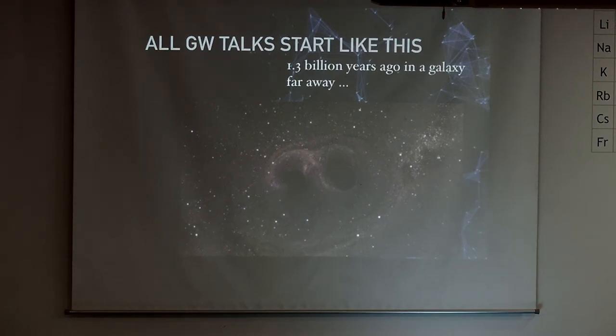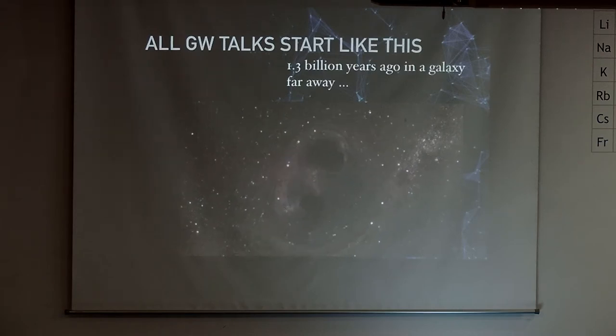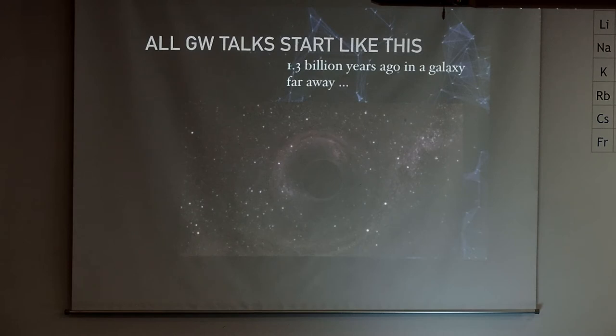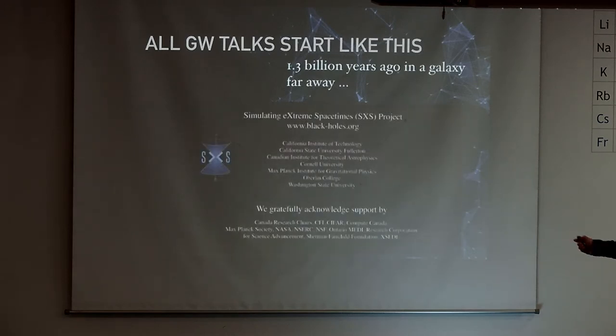If you've ever been to a gravitational wave talk, mostly outreach, they all begin kind of like this with this beautiful narrative that we've detected gravitational waves coming from a galaxy far far away. There's two black holes with about 40 solar masses that have been dancing around each other for a billion years or so. We don't know exactly, but at some point they got into the band of the LIGO interferometer and we were able to detect this collision that liberated a gigantic amount of energy in the form of gravitational waves. Of course this is not the way we see this. This is an artist's depiction of what happened.